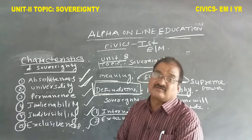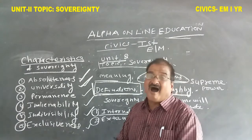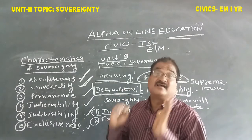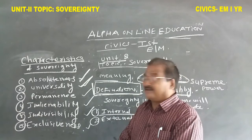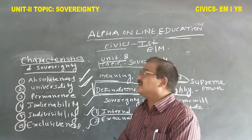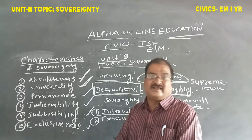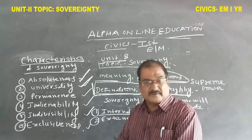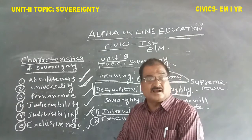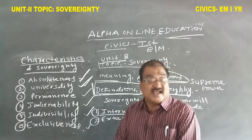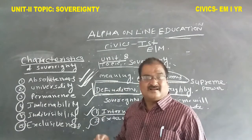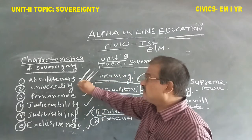No exemption for any institution — all who live in the country must accept the sovereignty of the state. That is universality. All persons and all institutions in the country are compulsorily under the control of state sovereignty. No one can be exempt. In the ideology of state sovereignty, all are equal.